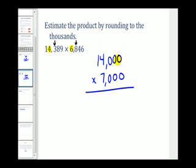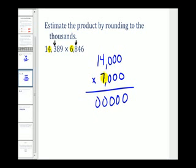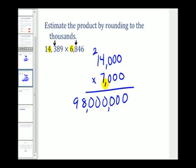Now we'll multiply. The first three digits on the right are zero, so we'll have three zeros in our product. Multiplying by seven: seven times zero is zero three times, then seven times four is 28 — write down the eight and carry the two; seven times one is seven plus two, which is nine. So our estimation is 98 million. Notice this was a lot less work than finding the original product, so if we don't need to be precise, this is a great way to estimate.